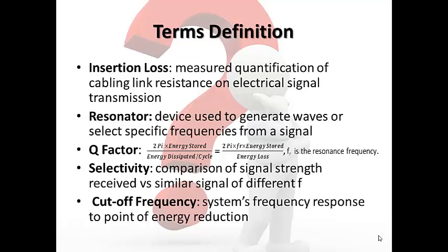The second term is resonator. Resonators are devices used to either generate waves of specific frequencies or to select specific frequencies from a signal. The third term is quality factor, also known as Q factor. Q factor, defined by the equation on the screen, is the ratio of energy stored against energy dissipated. Obviously, the higher the quality factor, the more efficient the device will be.